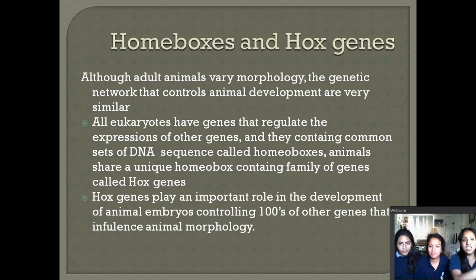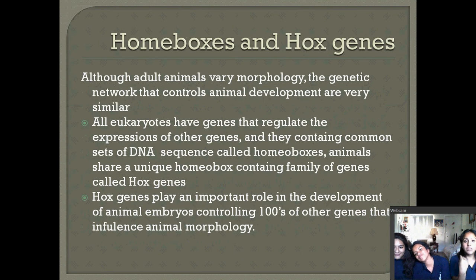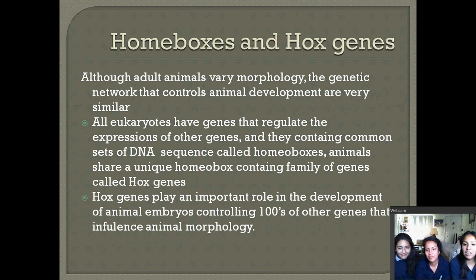Next is homeoboxes and Hox genes. Although animals vary morphologically, the genetic networks that control animal development are very similar. All eukaryotes have genes that regulate the expression of other genes, and they contain common DNA sequences called homeoboxes. Animals share a unique homeobox-containing family of genes called Hox genes, which play an important role in the development of animal embryos, controlling hundreds of other genes that influence animal morphology.